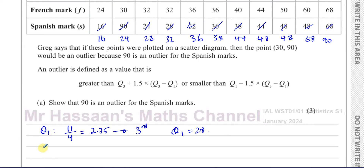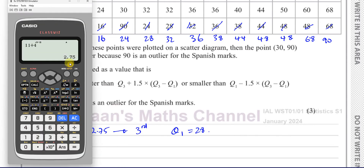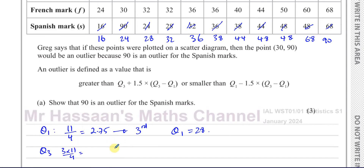The upper quartile Q3 uses 3N over 4. So 3 times 11 over 4 gives us 33 over 4, which is 8.25. We always round up to the next term, so 8.25 rounds up to 9. We need the 9th entry — counting from the end: 11th, 10th, 9th — so Q3 is 48. The lower quartile is 28 and the upper quartile is 48.